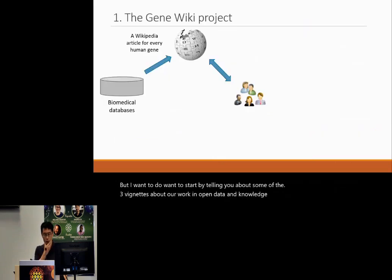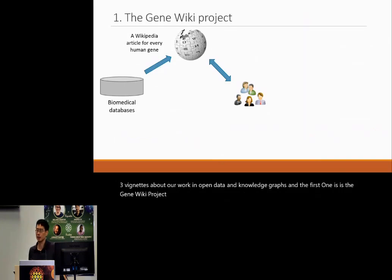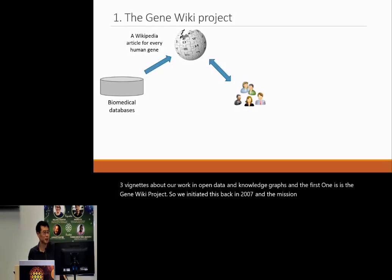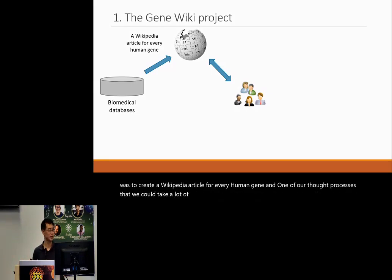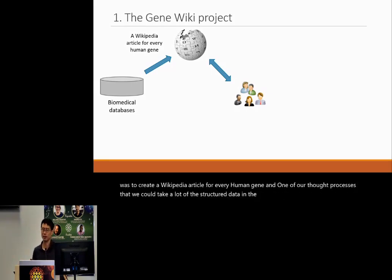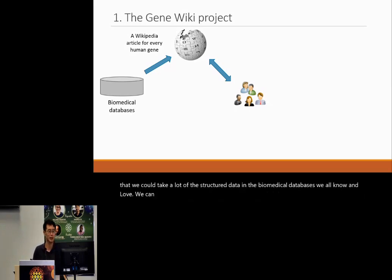I want to start by telling you about three vignettes about our work in open data and knowledge graphs. The first one is the GeneWiki project. We initiated this back in 2007, and the mission statement at the time was to create a Wikipedia article for every human gene.